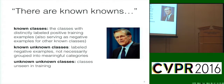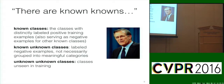In machine learning we have known classes — classes with distinctly labeled positive training examples, also serving as negative examples for other known classes. Known unknown classes could be labeled negative examples but without specific class labels, like training a face detector where you have a positive class of faces and a smattering of random classes labeled simply as negative. And then unknown unknown classes — classes unseen in training — which is really what we'll focus on, because this is where machine learning doesn't give us good answers.